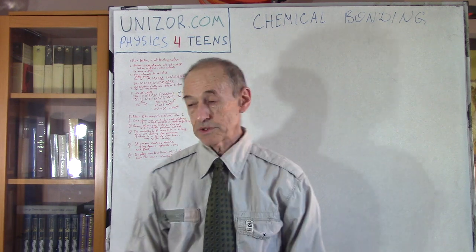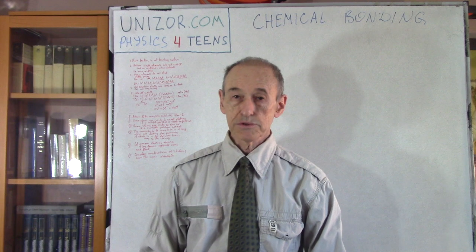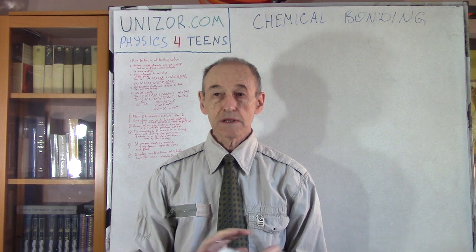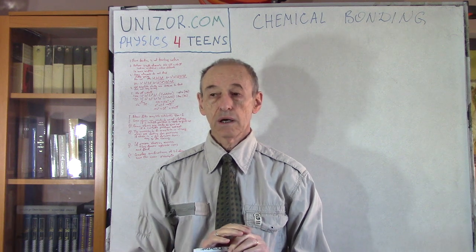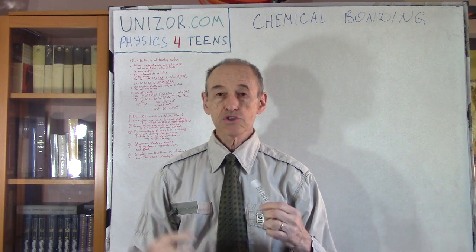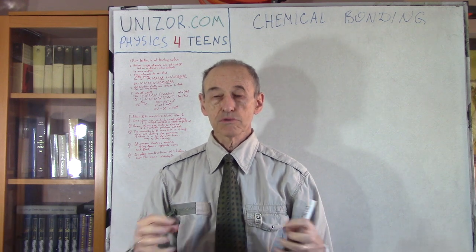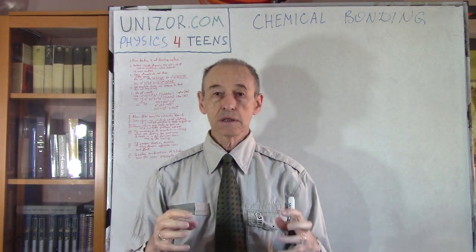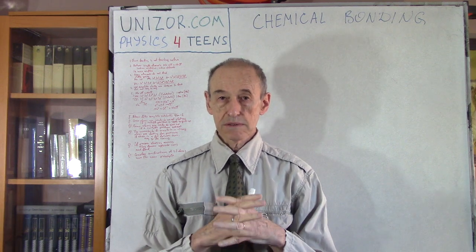When we talk about chemical bonding between atoms, we are talking primarily about interaction which does not affect the nucleus of the atoms. The nucleus is completely unchanged during these combinations. The combinations happen at the level of electrons — it's about how electrons rearrange themselves to create this bonding.